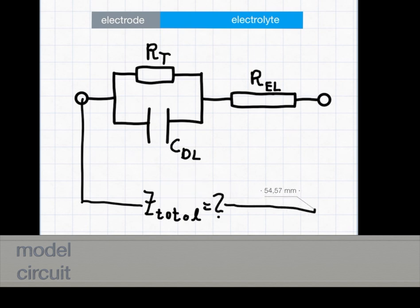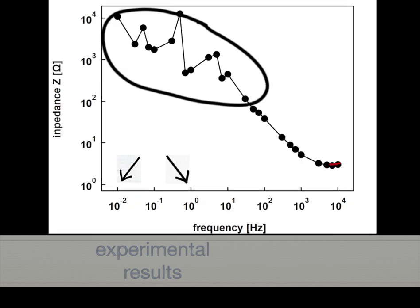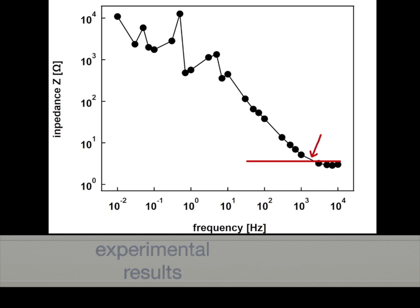When you record your first impedance data, it might happen that your experimental data do not really look nice. Especially in the low frequency range between 0.01 and 1 Hz, you might record data which really spread a bit.